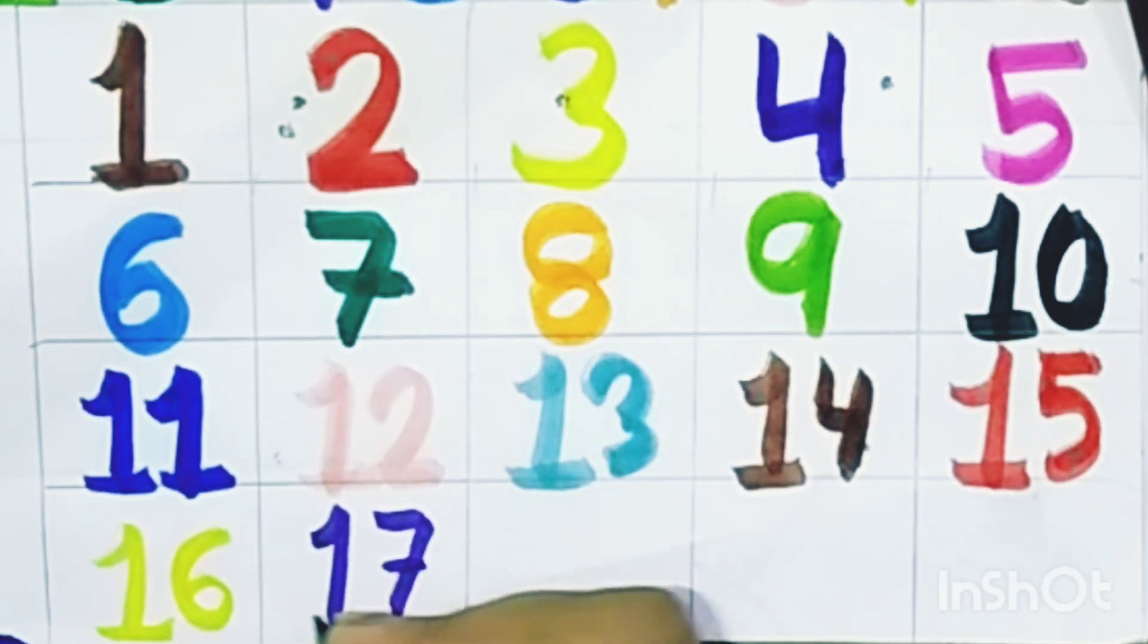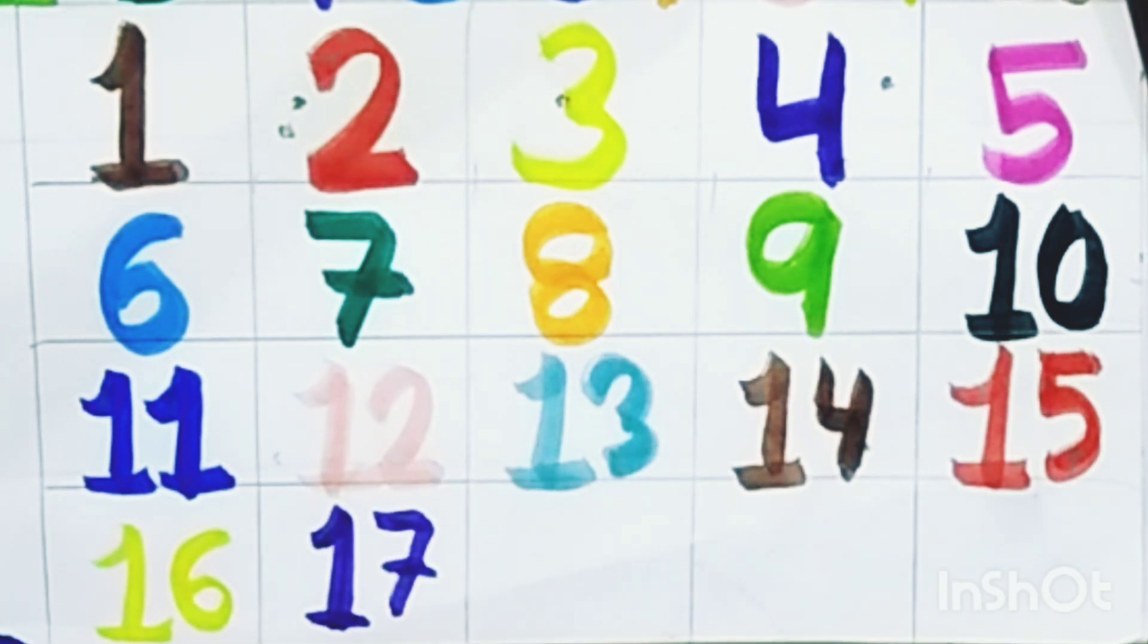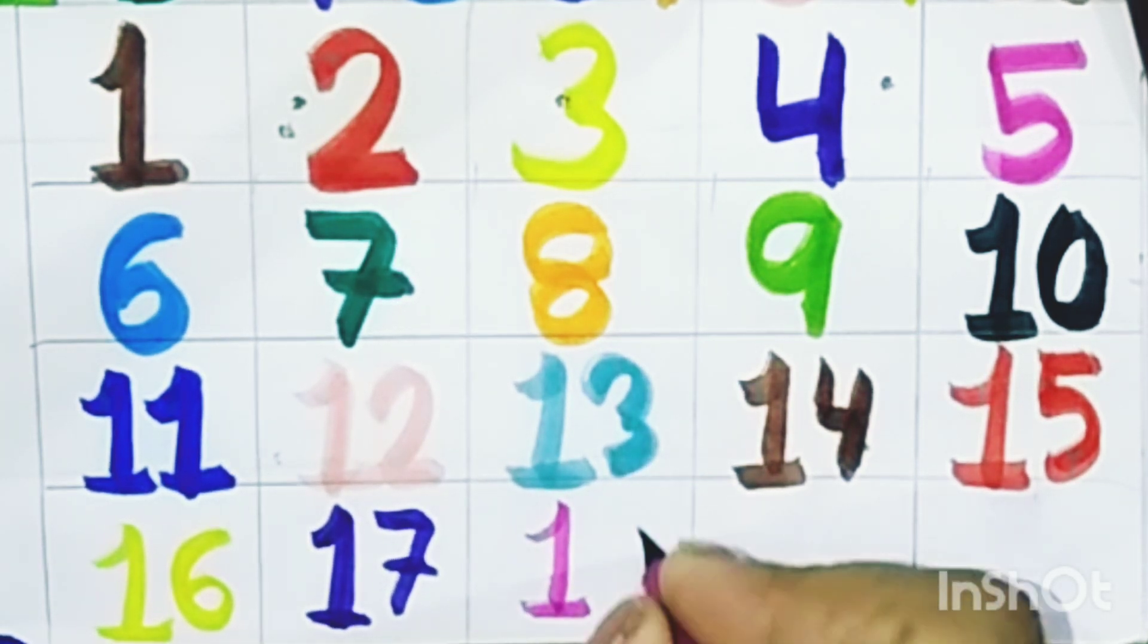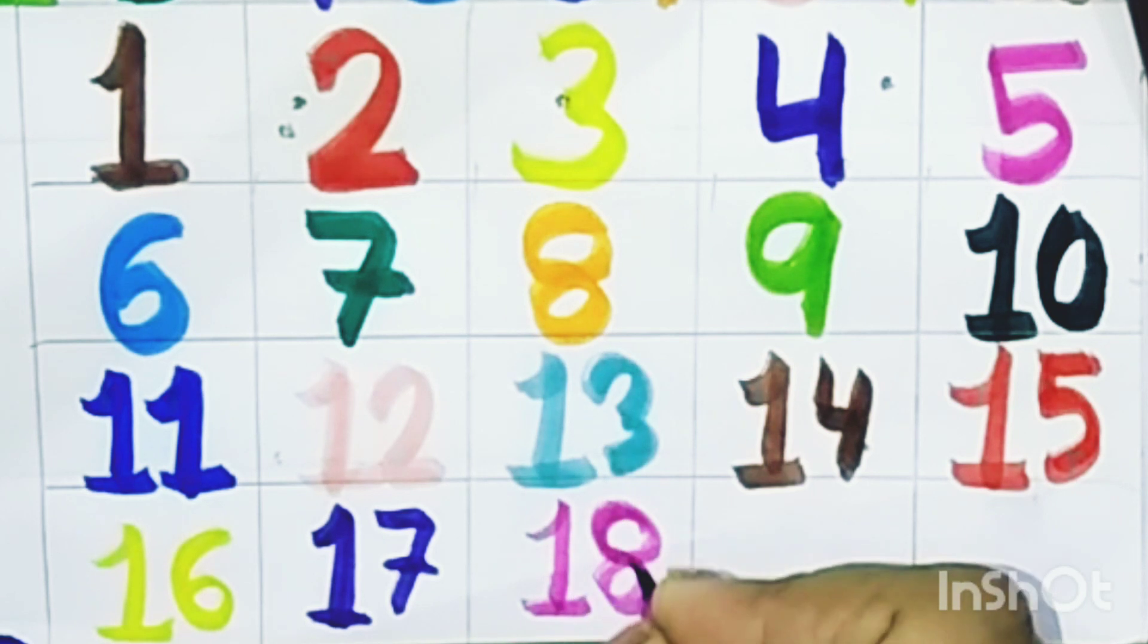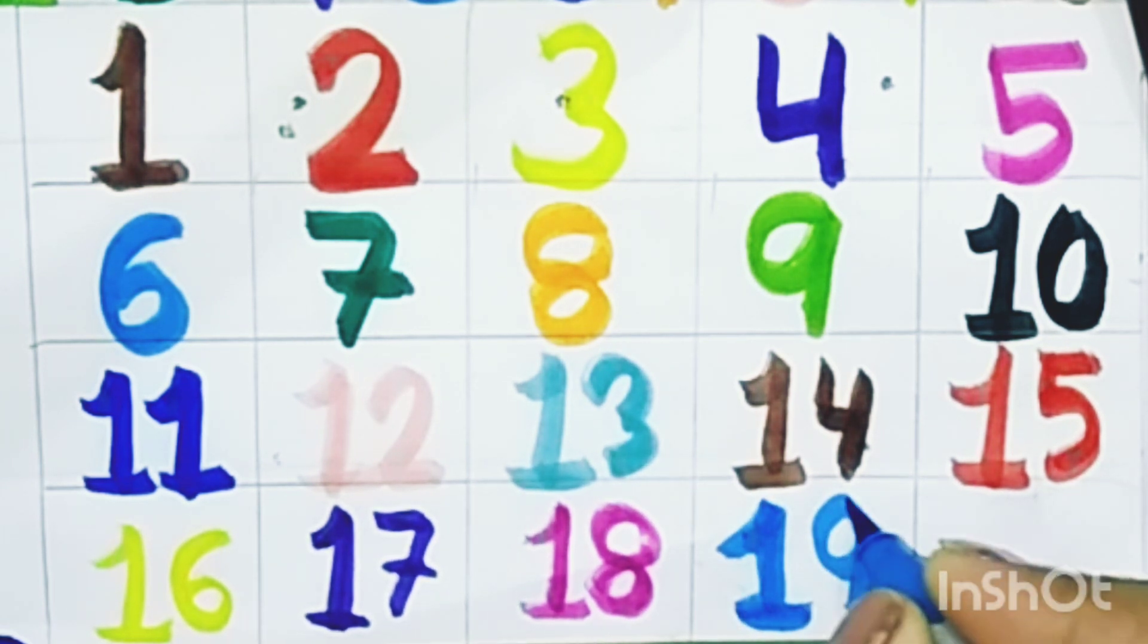One seven, seventeen. One seven, seventeen. One eight, eighteen. One eight, eighteen. One nine, nineteen. One nine, nineteen. And two zero, twenty.